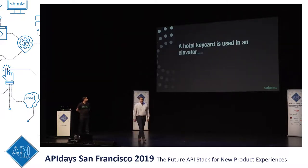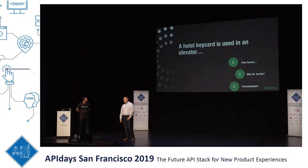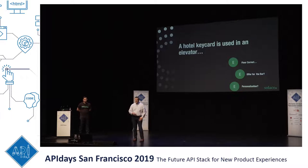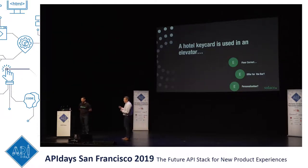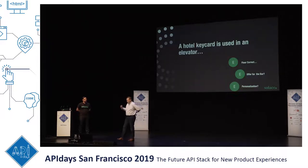A hotel key card used in an elevator is another type of event. You can validate that I'm allowed to go to that floor, but maybe also give an offer for the bar. If I was there last night, a two-for-one offer might mean I have another drink and spend more money. Some personalization — a nice message targeted directly towards me increases my brand awareness and desire to stay at that hotel chain.